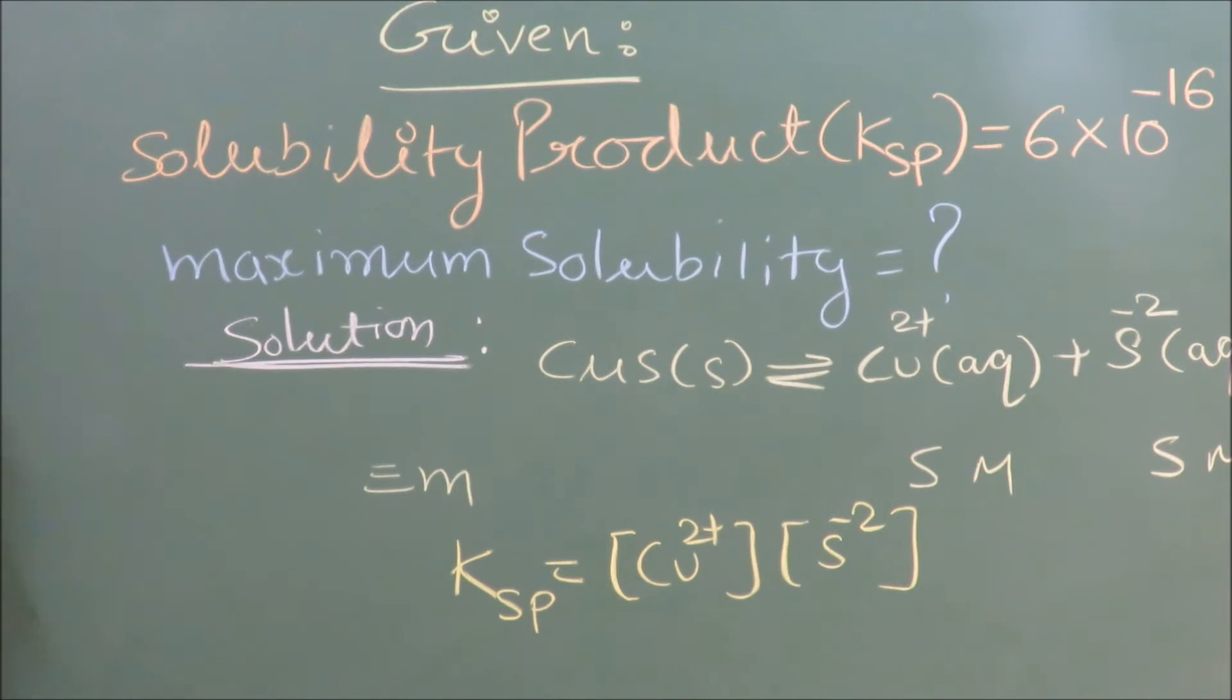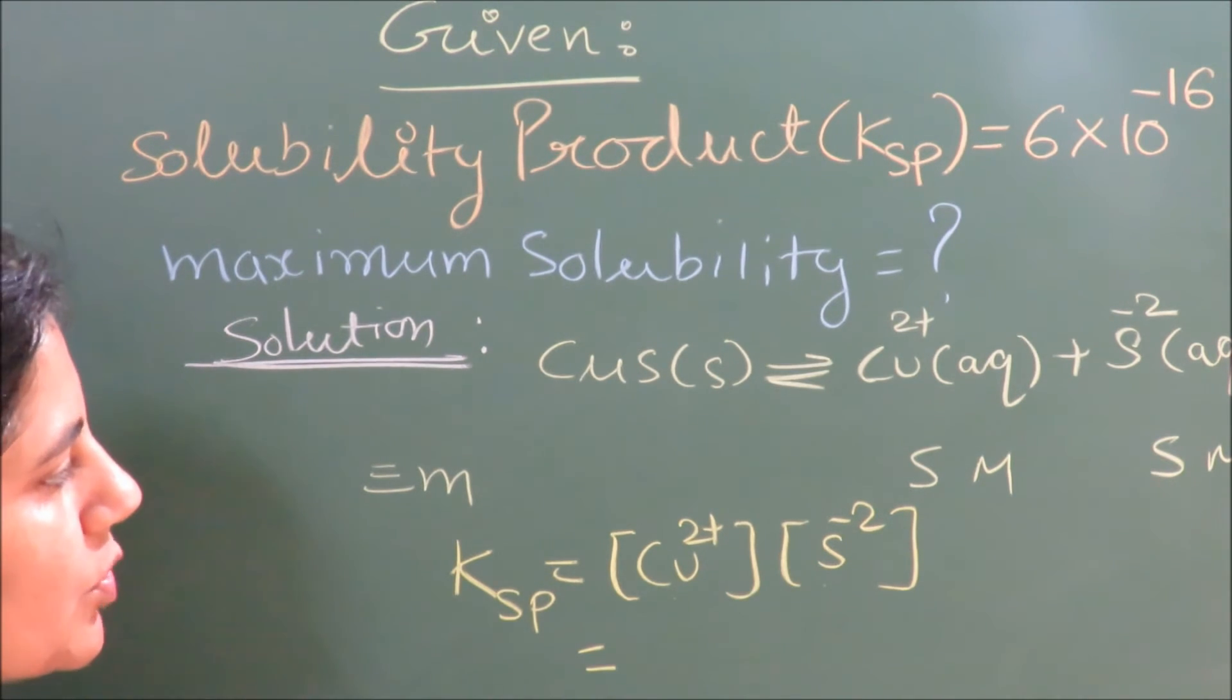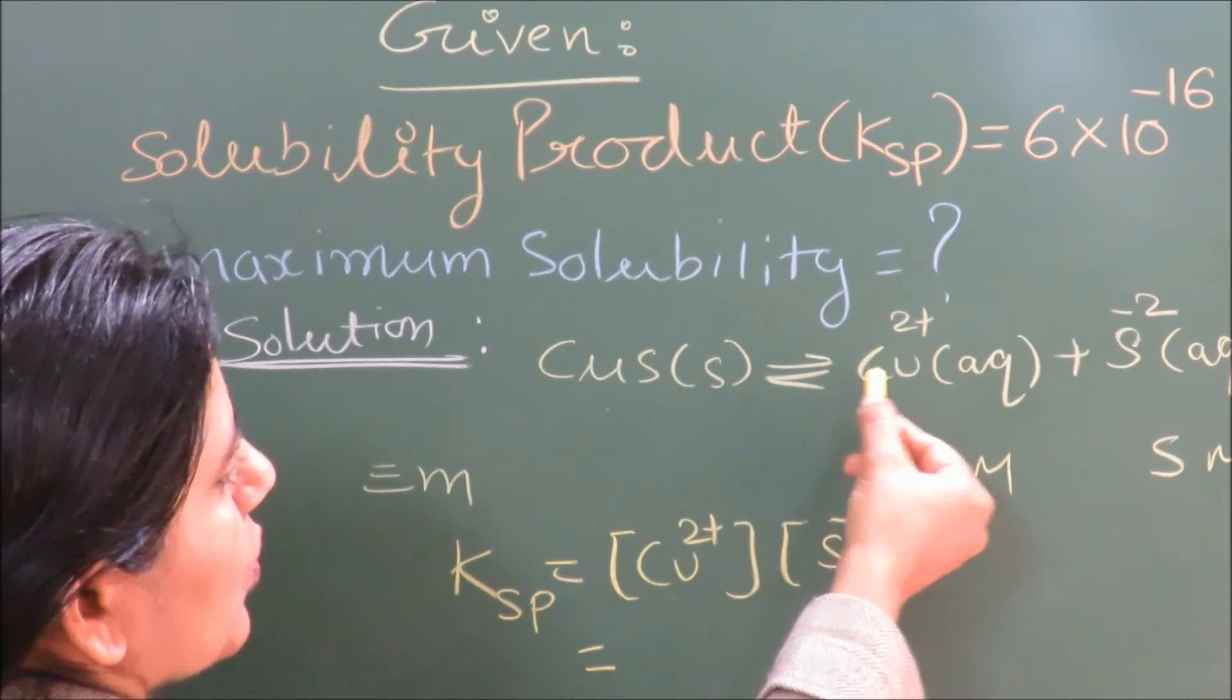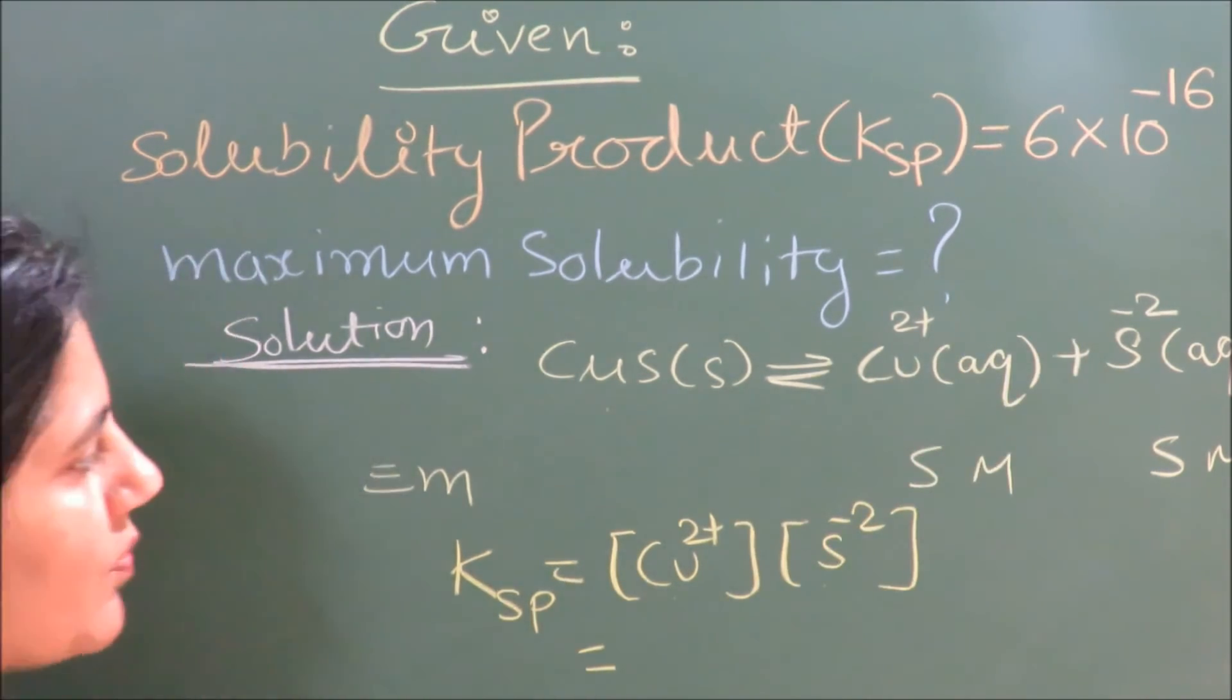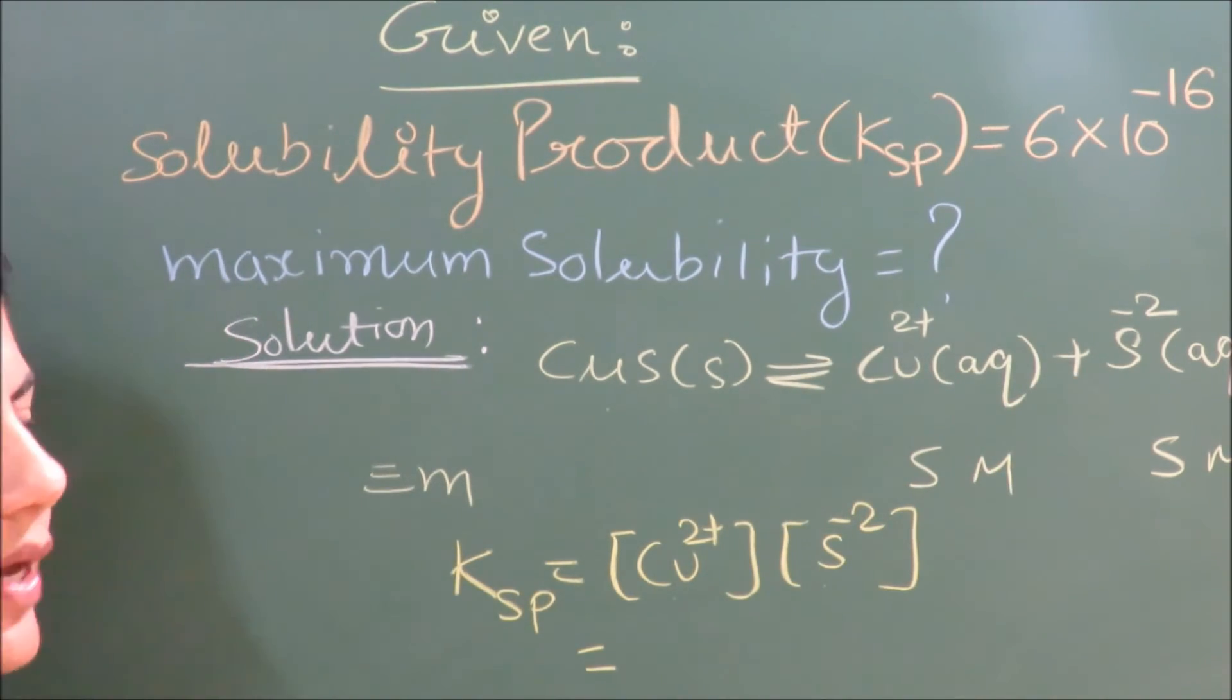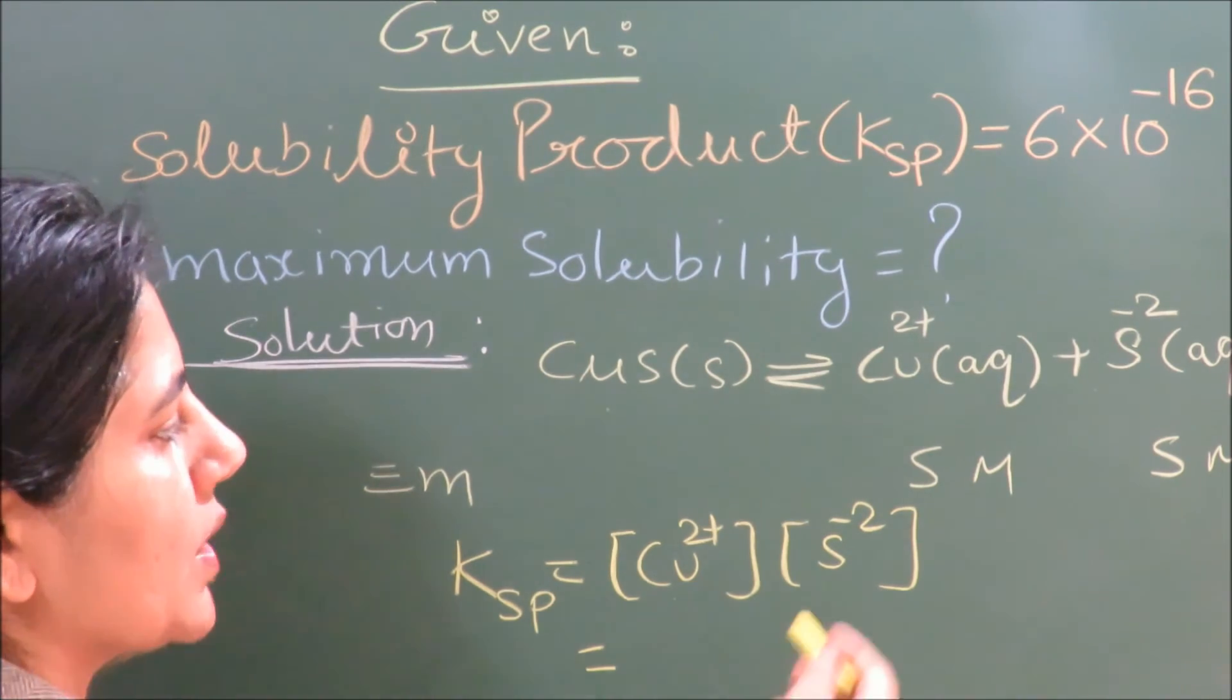The value is S² = S × S. Both concentrations would be equal because CuS when ionized gives one mole of copper ion and one mole of sulfide ion. The concentration of both ions from CuS would be equal, so we assume it to be S and S.